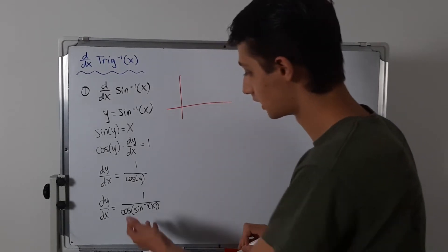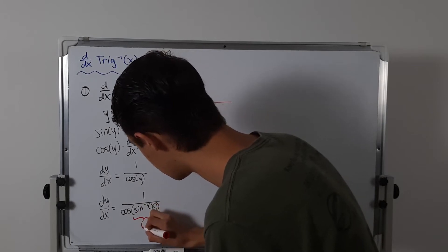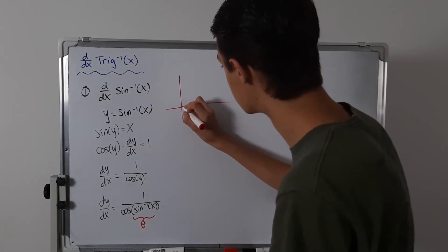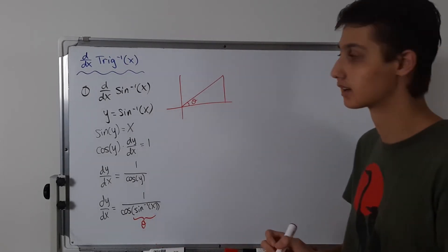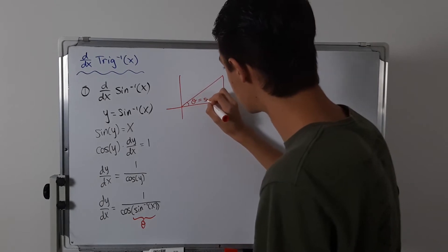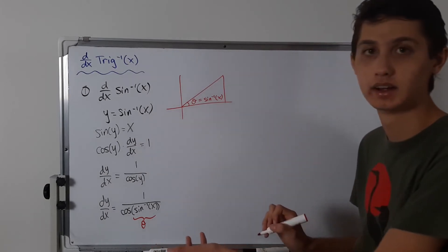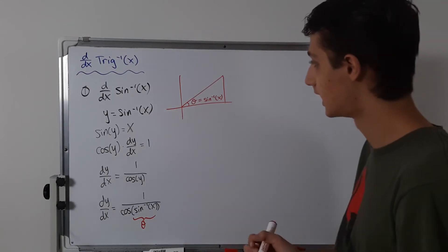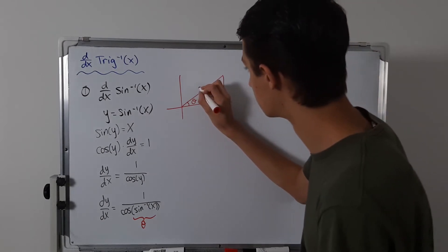We're going to think of this sine inverse of x as an angle — we call it theta — because now we're taking the cosine of theta. So we have our triangle, and this angle is theta, which equals sine inverse of x. Now let's pretend this is on the unit circle, so the hypotenuse is 1.